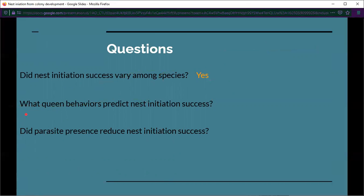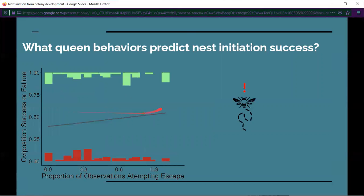The next question: what queen behaviors predict nest initiation success? The first one we can look at is attempting escape behavior. This graph shows queens that were successful on top in green, and queens that were unsuccessful on the bottom in red. The x-axis is the proportion of observations when they were attempting escape. As you can see, there's no real trend in this. Attempting escape was not predictive of nest initiation success.